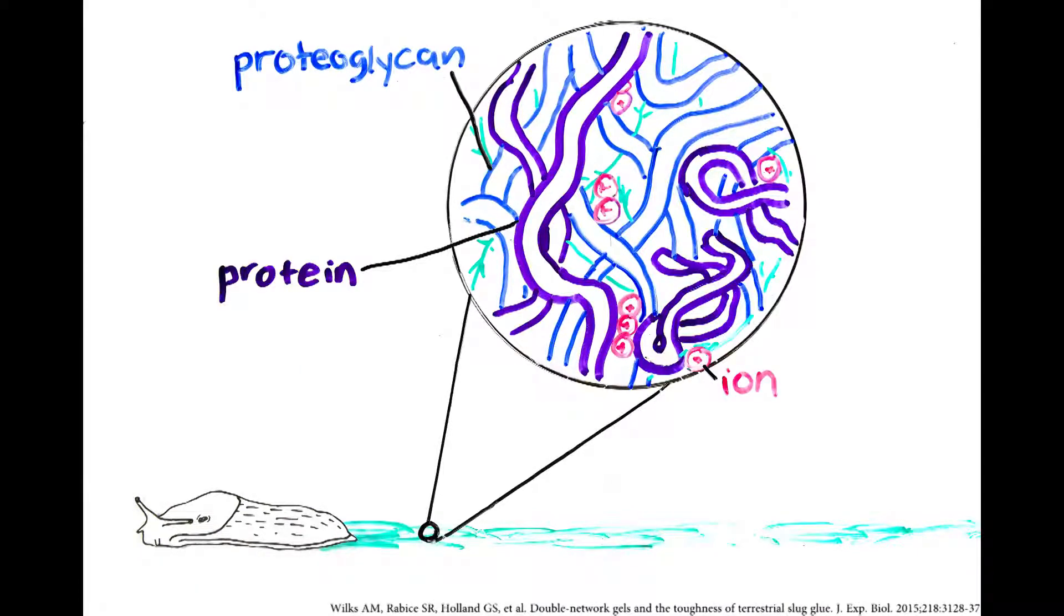Proteoglycans are proteins with long polysaccharide chains attached to them, and are commonly found in cartilage. In slime, they tangle to form a soft, deformable network with a net negative charge.